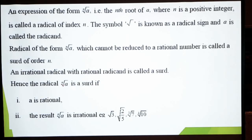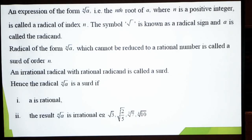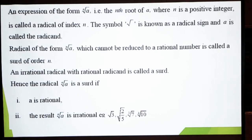Hence the radical nth root of a is a surd if — اب اس کی جو دو conditions ہیں وہ یہ ہیں: پہلی condition یہ کہ a rational number ہو، یعنی 5، 4، 7، 8 جو بھی ہو۔ اور دوسری condition یہ کہ the resultant nth root of a یعنی پورا کا پورا expression irrational ہو — جیسے √3، √2، √5، cube root of 7، 4th root of 10۔ یہ تمام expressions ایسے ہیں جن کو آپ radical sign سے آزاد نہیں کر سکتے، تو یہ سارے surds کہلاتے ہیں۔